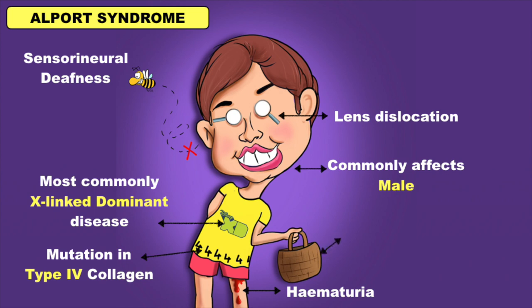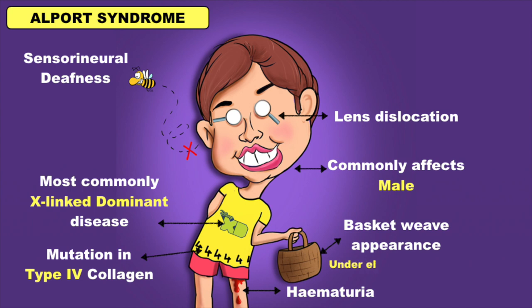The basket in his hand will help you to remember the typical basket-web appearance under the electron microscope. It is diagnostic for Alport syndrome, so this is an important point to remember.